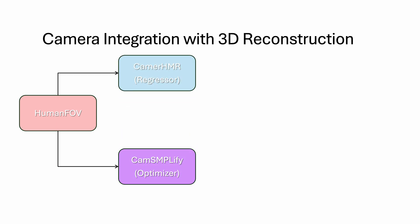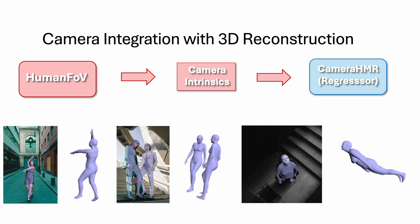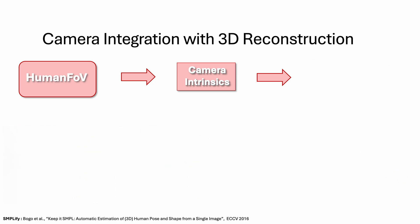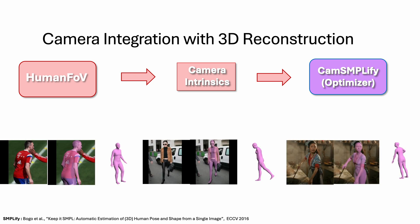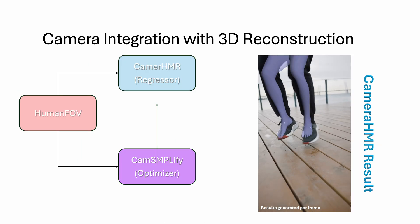We use HumanFOV to enhance 3D reconstruction in two key ways. First, we use the predicted camera intrinsics in our regressor, CameraHMR, to project the 3D body onto the full image, resulting in more accurate 2D alignment with the image. Second, we modify SMPLify optimization to include the predicted camera intrinsics and generate around 3.2 million high-quality pseudo-ground truth labels for training. We further use this data to train CameraHMR.